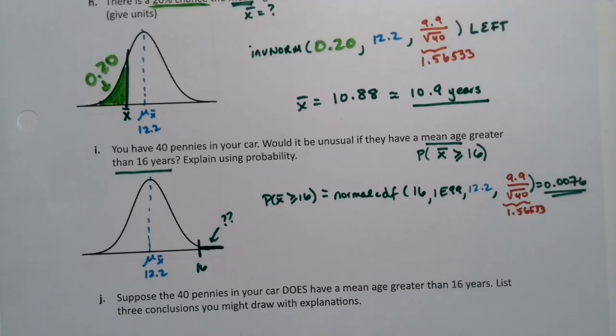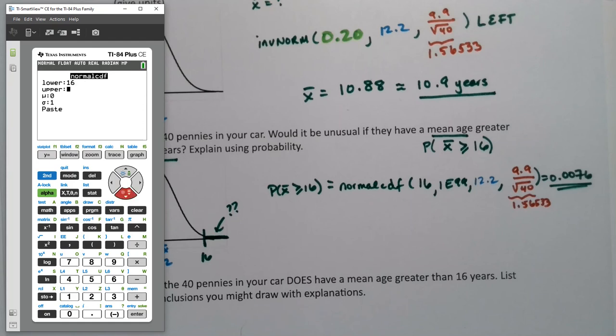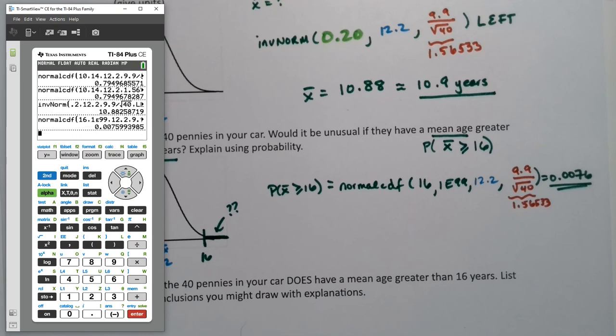If I do it in the calculator, it would be normal CDF. So let's see, 16, 1. Remember that E is above your comma. So second comma, 99, 12.2, 9.9 divide square root 40, close parentheses. And again, if you prefer the decimal, feel free to type the decimal. And we get .007599, so 0076, just like we got out of StatCrunch.